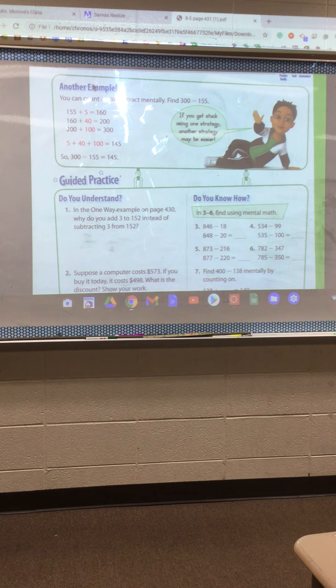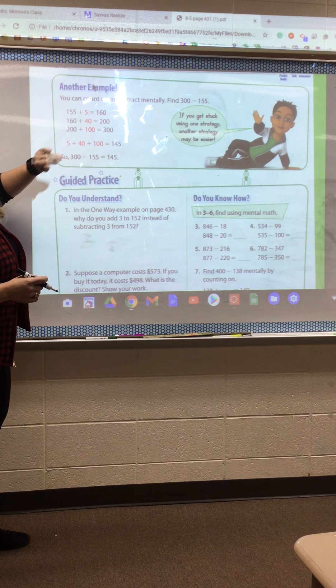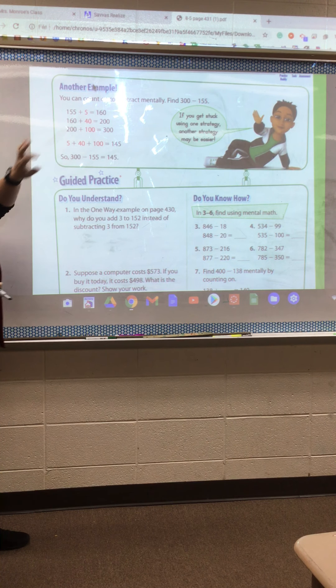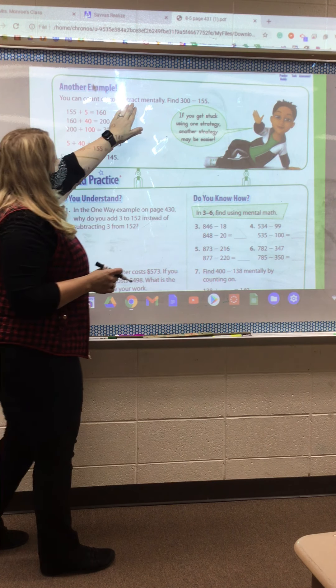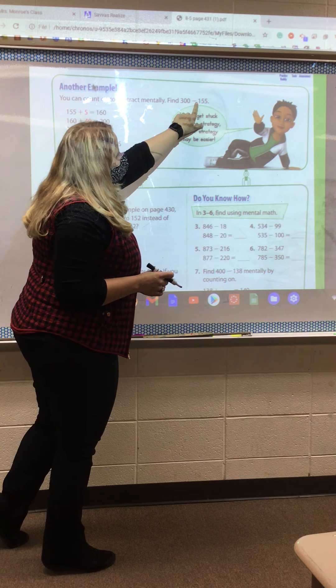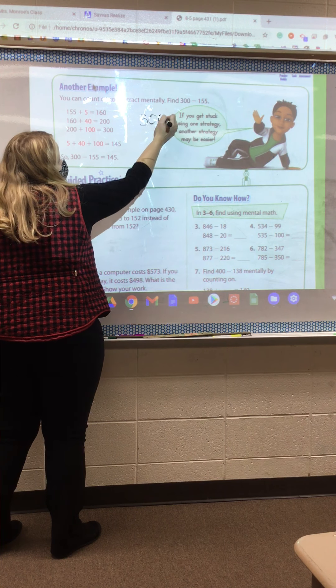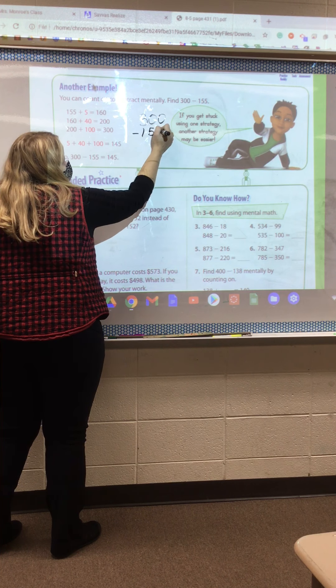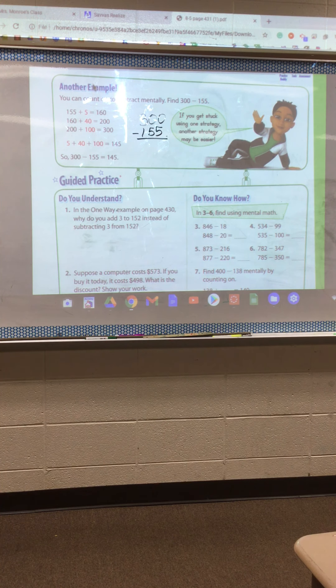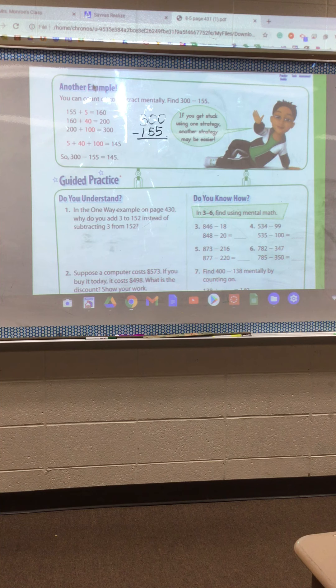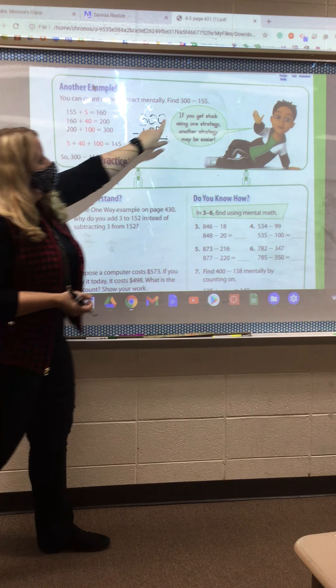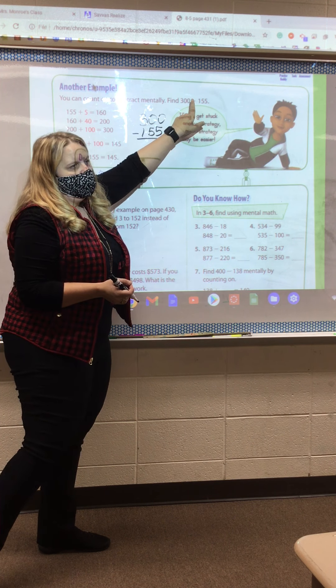The first trick we're learning is to count on, and we're doing it by separating it into ones, tens, and then hundreds. So if you look up here, it says you can count on to subtract mentally. Find 300 minus 155. I want you to go ahead and write in your space right here 300 minus 155. Now we're going to go ahead and do it like that normal stack and subtract here in just a minute. But let's first look and see what they've done in the book to tell us how to count on.